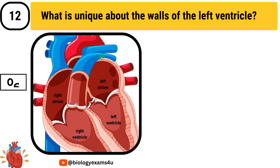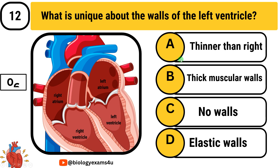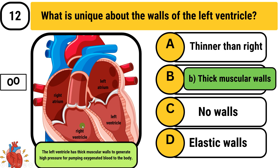Question number 12: What is unique about the walls of the left ventricle? Option A: thinner than right. Option B: thicker muscular walls. Option C: no walls. Option D: elastic walls. The answer is thick muscular walls. The left ventricle has thick muscular walls to generate high pressure for pumping oxygenated blood to the body.